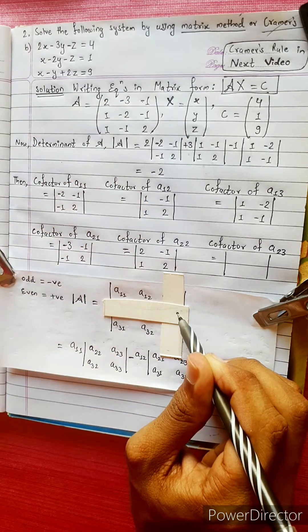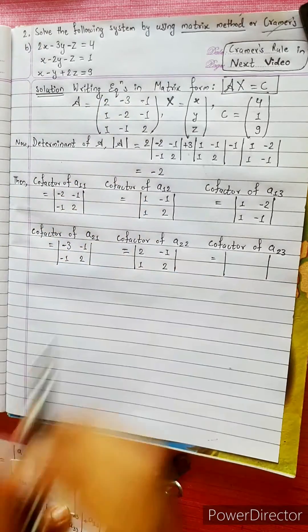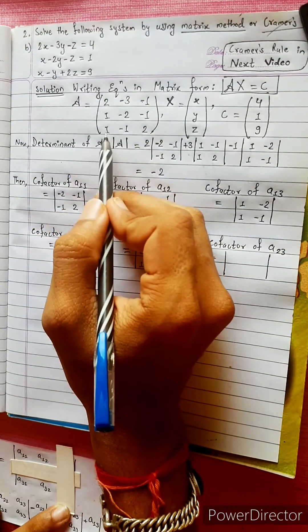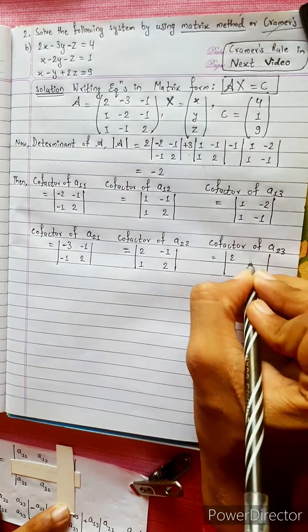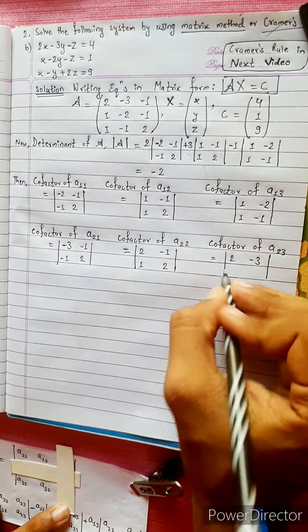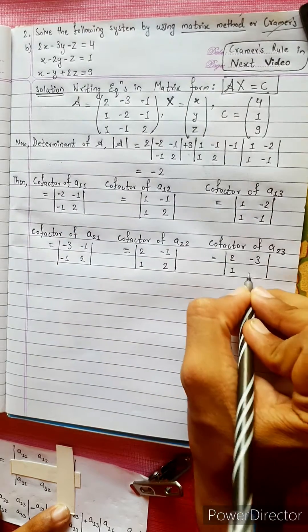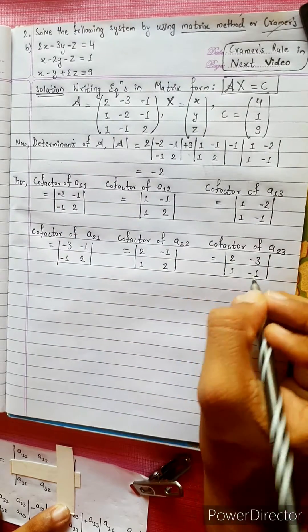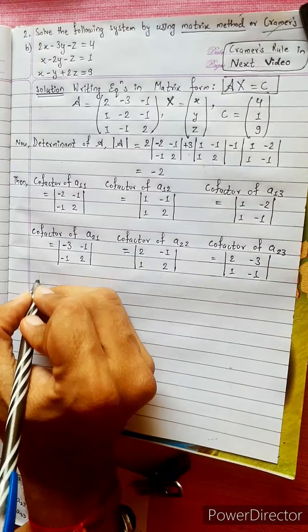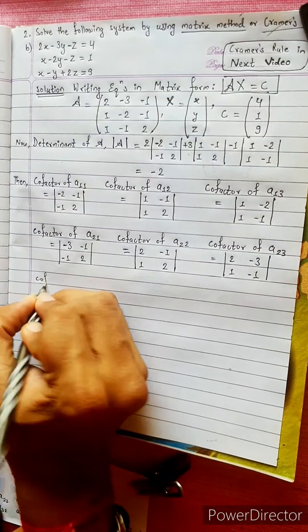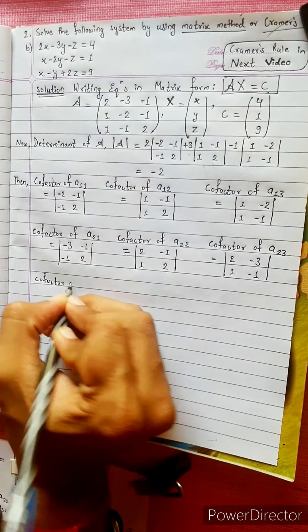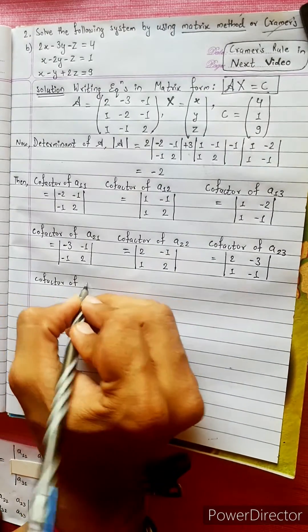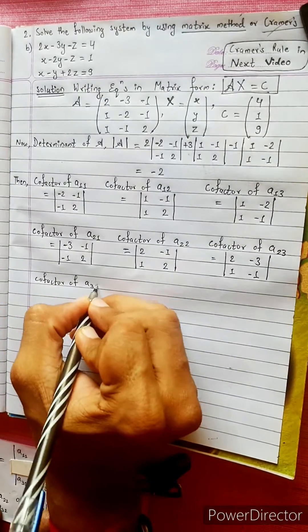We will start into the fourth round: two minus three, one minus one. Our cofactor of A31, A32.